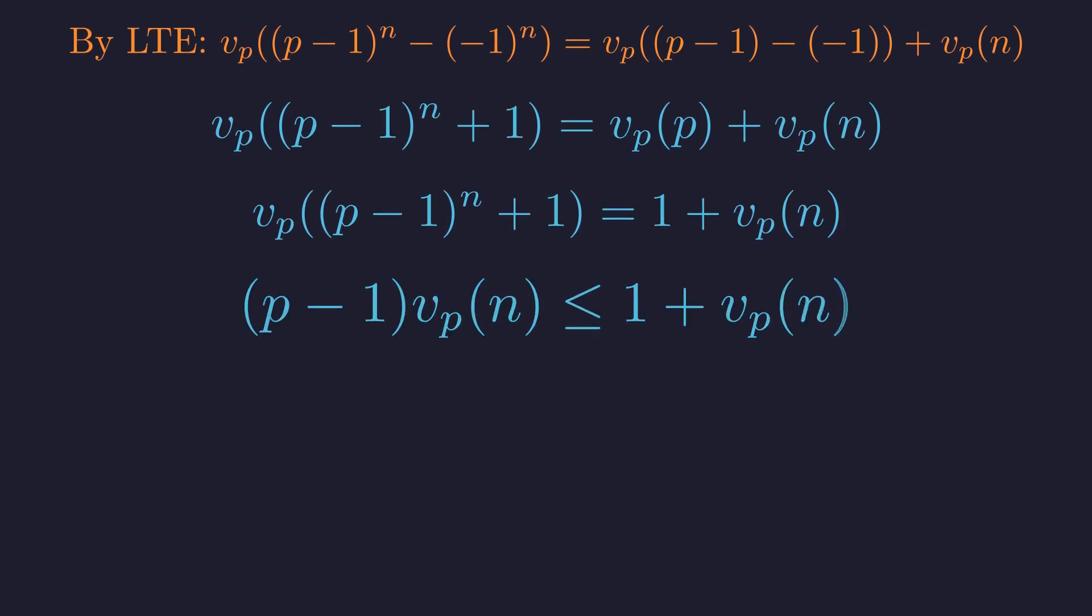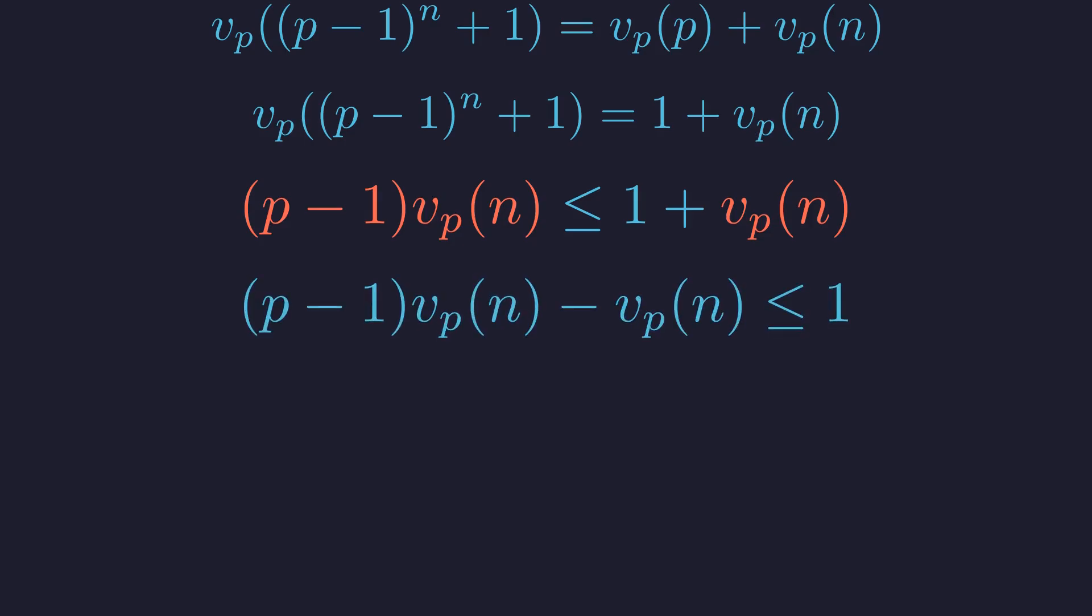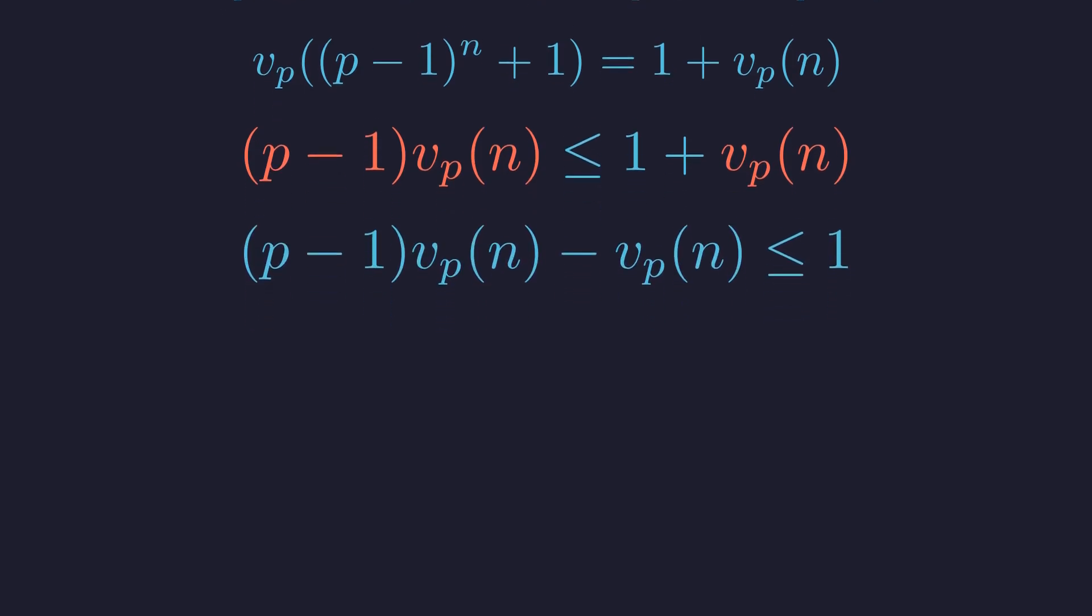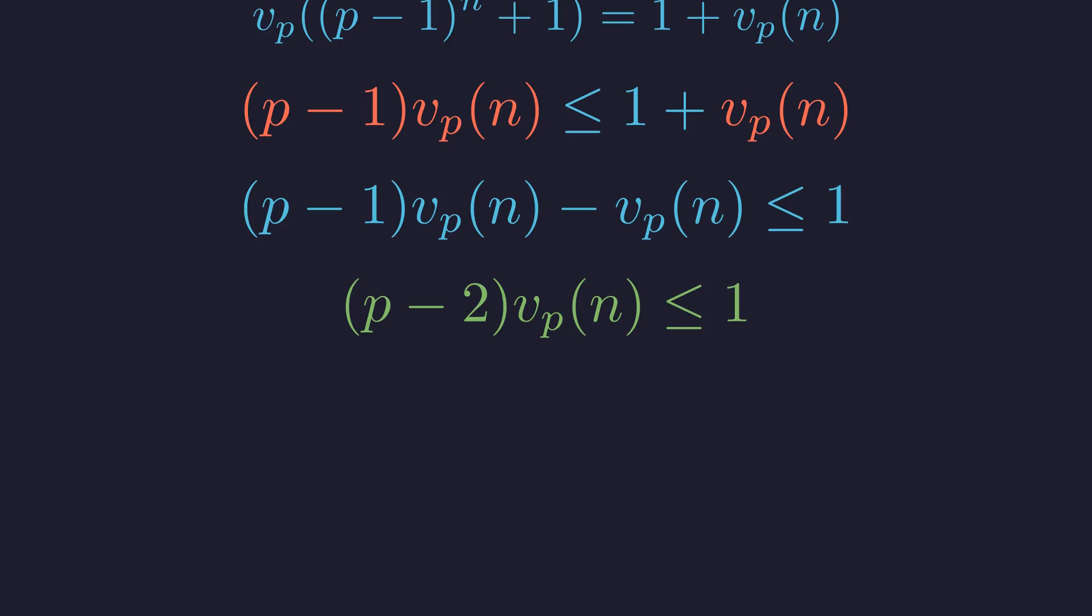Now we substitute this back into our inequality. This substitution yields a powerful new inequality. To simplify, we gather all terms involving v_p(n) on one side. We subtract v_p(n) from both sides. Factoring out v_p(n), we arrive at this simple constraint. The problem's complexity has been reduced significantly.